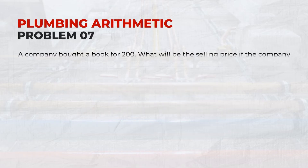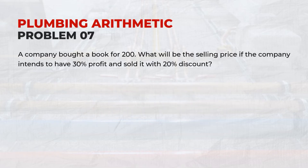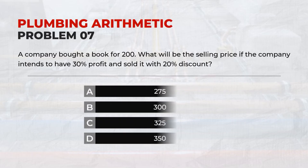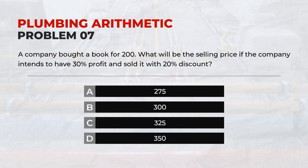A company bought a book for $200. What will be the selling price if the company intends to have 30% profit and sold it with a 20% discount? Answer: C. 325.